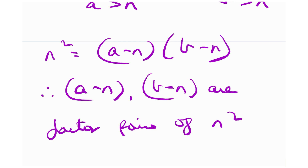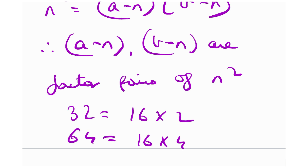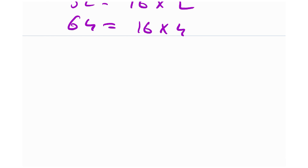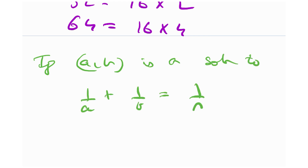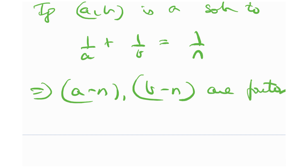Since (a - n)(b - n) = n², the quantities (a - n) and (b - n) are factor pairs of n². For example, 16 and 4 are a factor pair of 64. So if (a, b) is a solution to 1/a + 1/b = 1/n, then (a - n) and (b - n) are factor pairs of n².